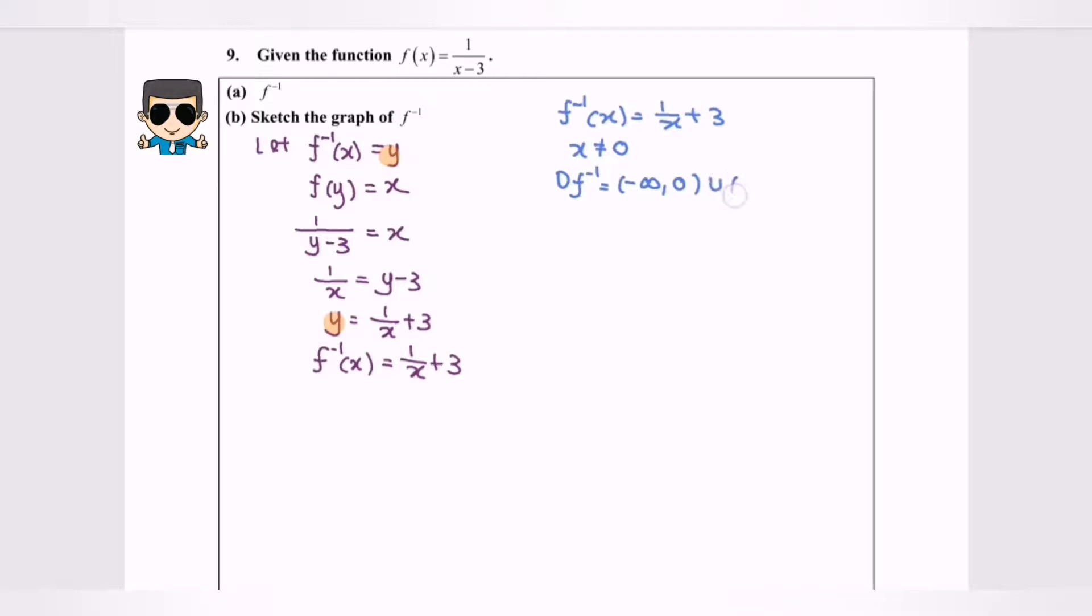Now we're going to sketch the graph. What we have to do is refer to the domain. The domain mentioned that x cannot equal 0, so that is the asymptote.